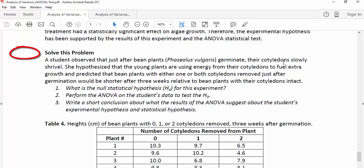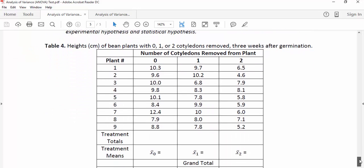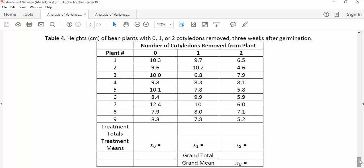So the first question says, what is the null statistical hypothesis for this experiment? So let's look at her data here. Here are heights of bean plants with either zero, one, or two cotyledons removed. So the null hypothesis would be that this mean is equal to this mean and is equal to this mean, that there are no statistical differences between the means that are calculated, which we haven't done that calculation yet.